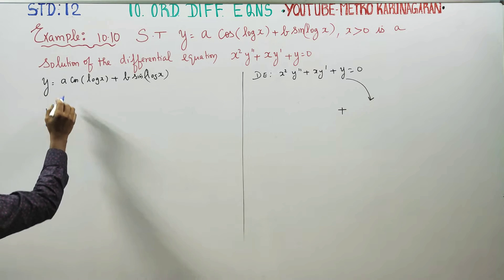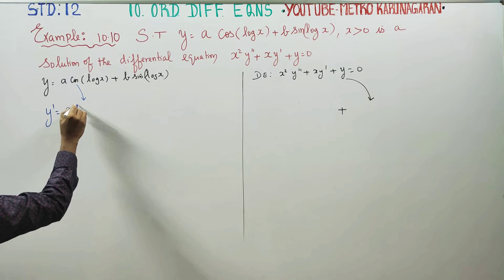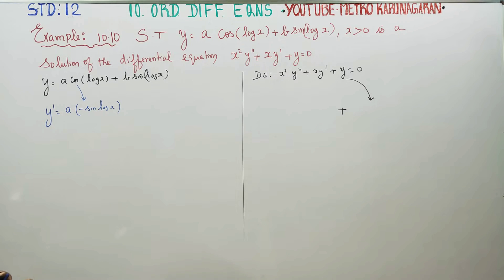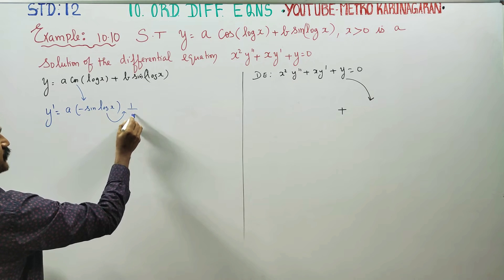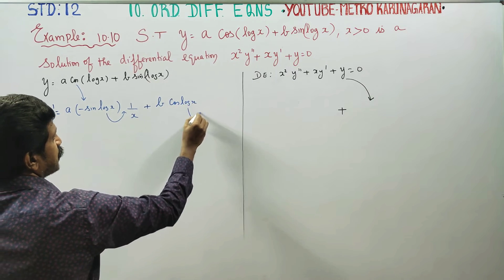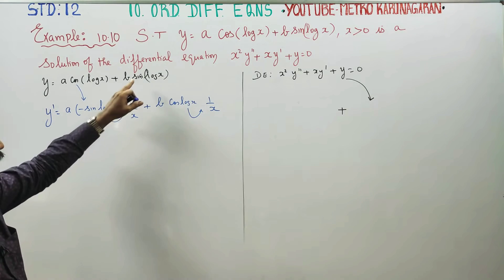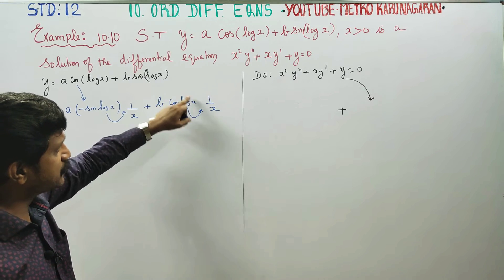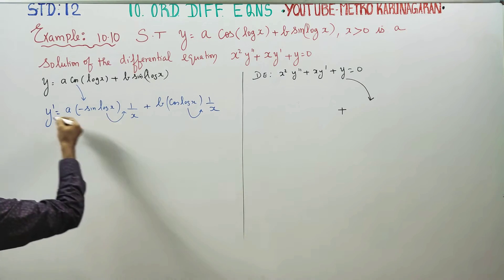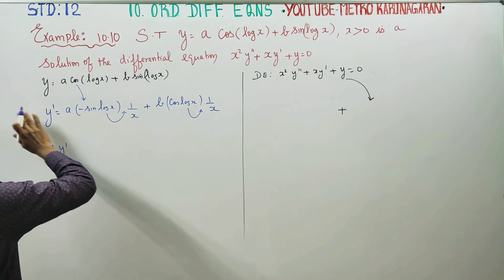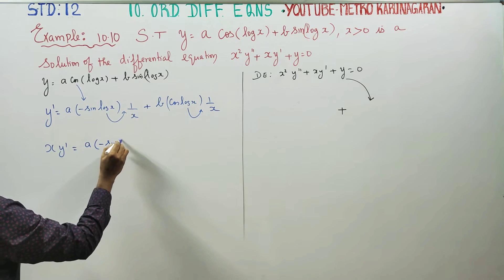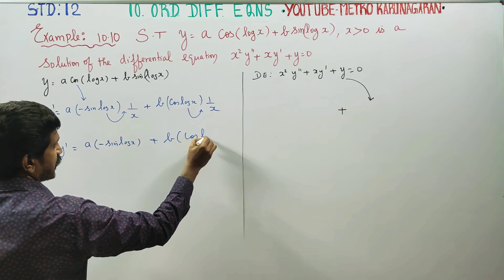First of all, y' is the derivative. Differentiating y: a·cos differentiates to give minus sin(log x), and log x differentiates to 1/x by the chain rule. Then plus b·sin differentiates to cos(log x), and log x differentiates to 1/x by the chain rule.